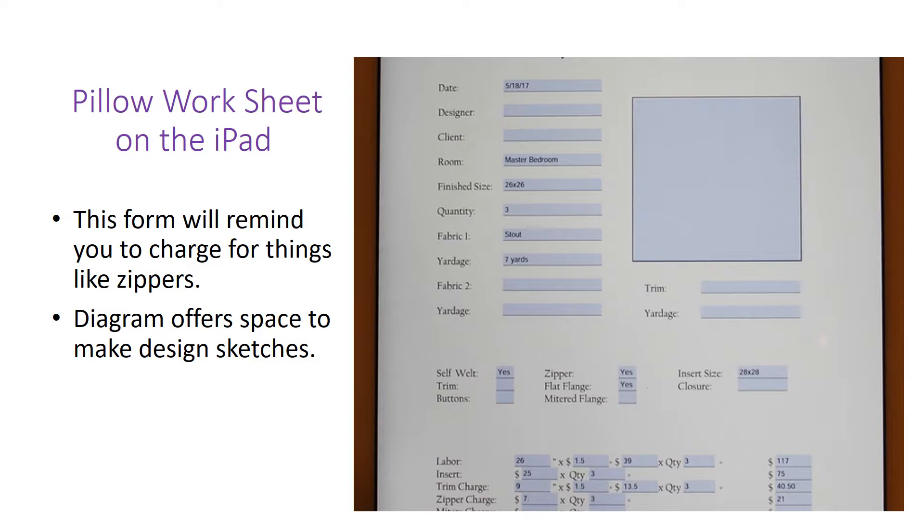Here's an example of a pillow measuring sheet. We had several different size pillows on this particular job. These measuring sheets are very comprehensive. There is a small area for a diagram if you need to do that. Reminds you of things like, do you need to add a zipper? And also, what is that charge at the bottom? These forms actually have your charges for the pillows at the bottom of the sheets. For your insert and your labor and your trim charge and your zipper charge. And if you are going to do a miter, if you charge differently for a flat flange instead of a mitered flange. So all of those things are there to help you not forget to leave anything off for charging.